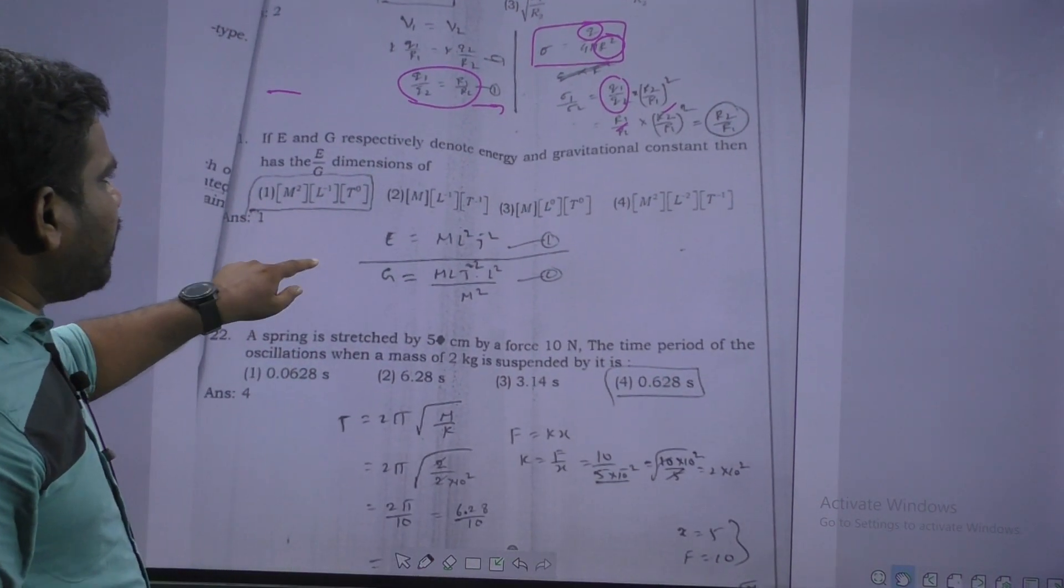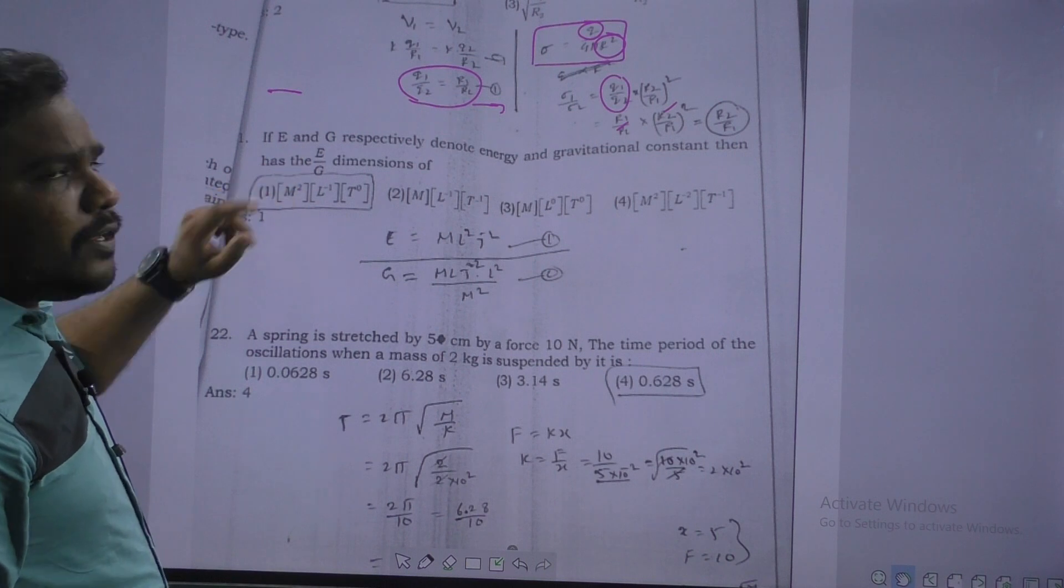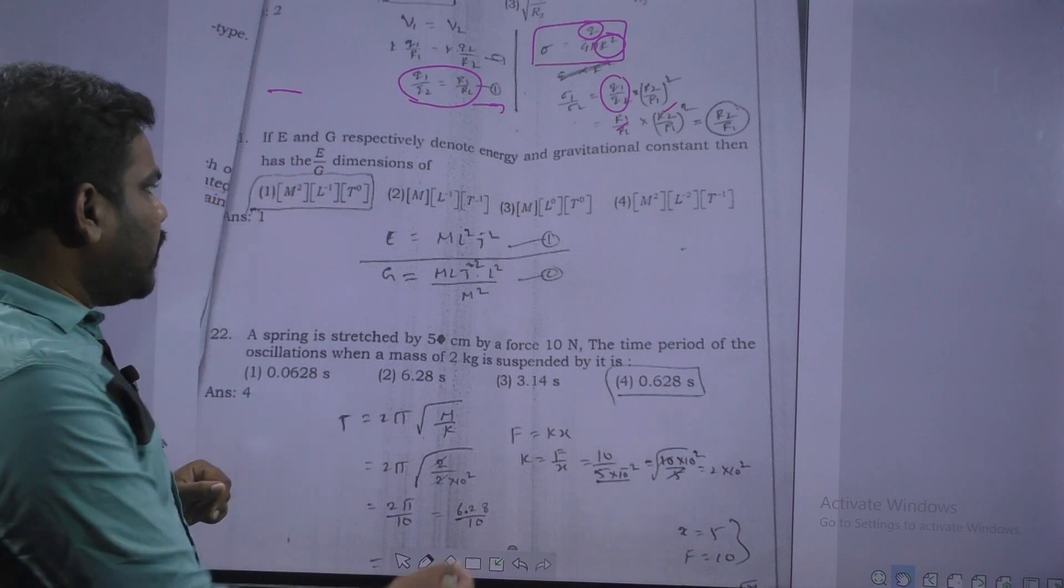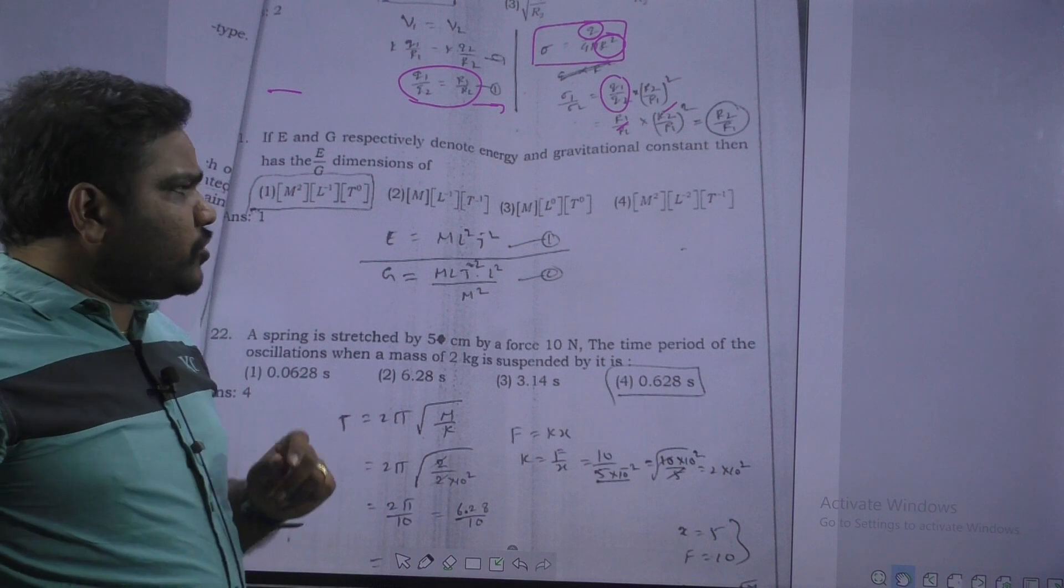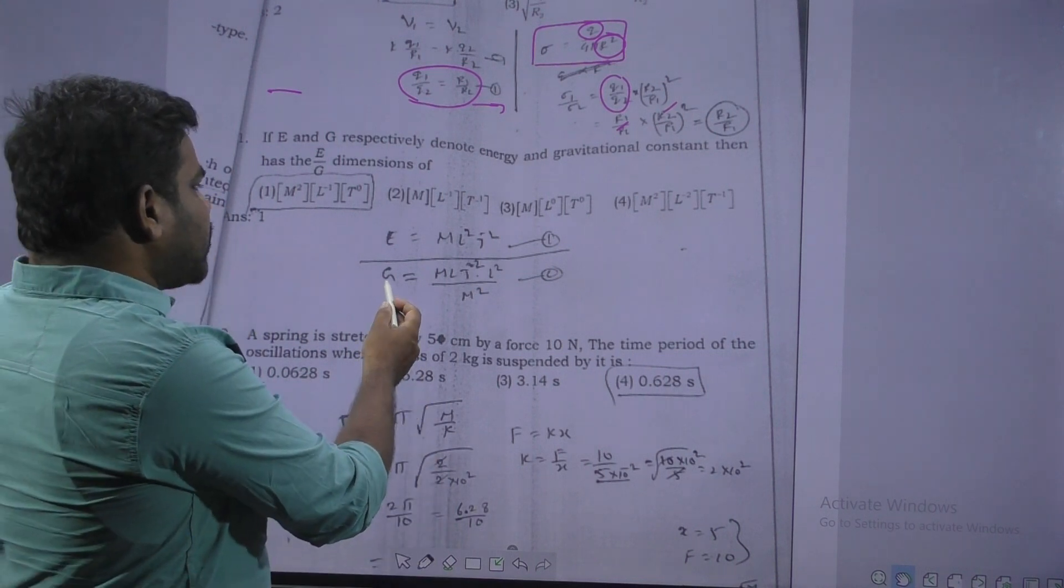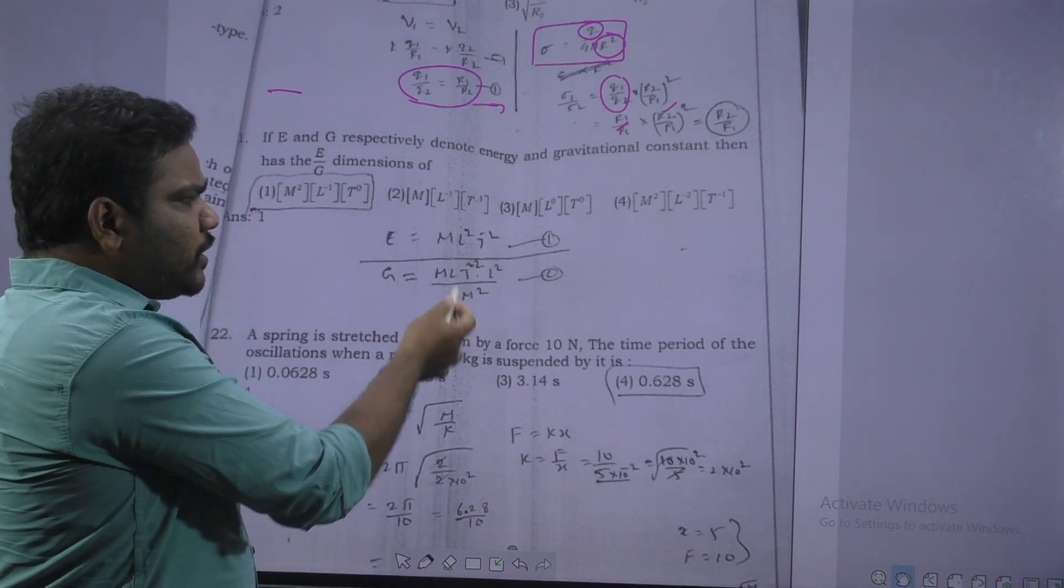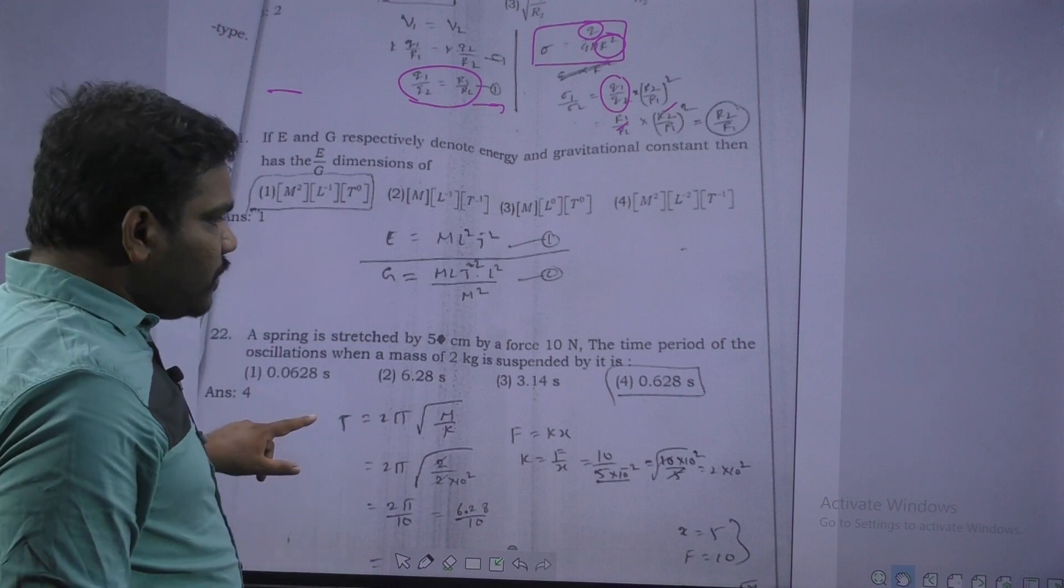Next. This is the dimensional formula, energy by universal gravitational constant. Energy we know, mL square T power minus 2 and gravity, universal gravitational constant, we know. Just divide it, we get option 1.